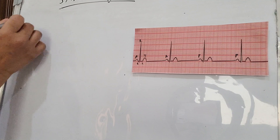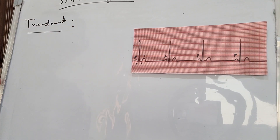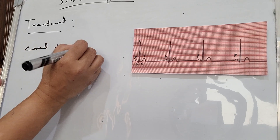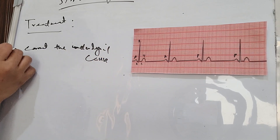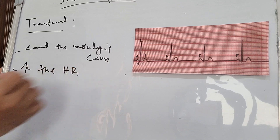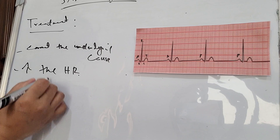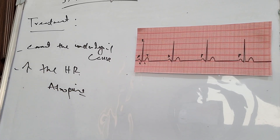What treatment do we give for sinus bradycardia? First, correct the underlying cause, and second, increase the heart rate. The medication we mostly use is atropine. We use atropine for sinus bradycardia patients.